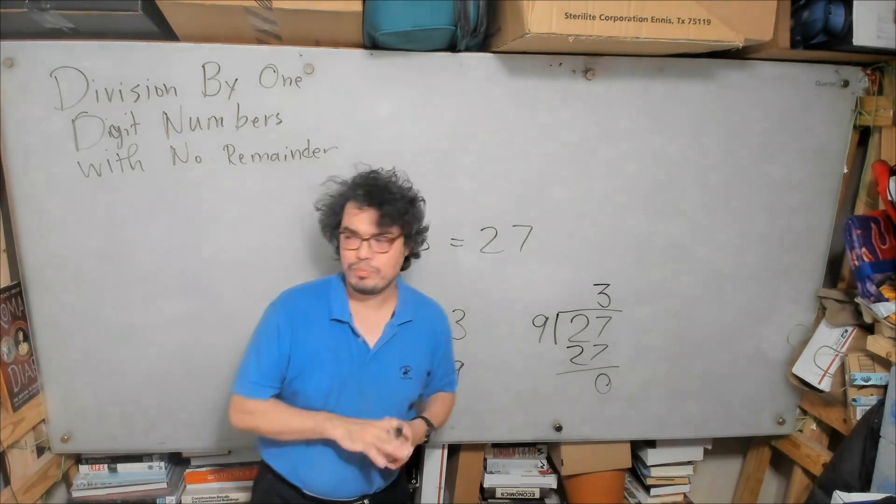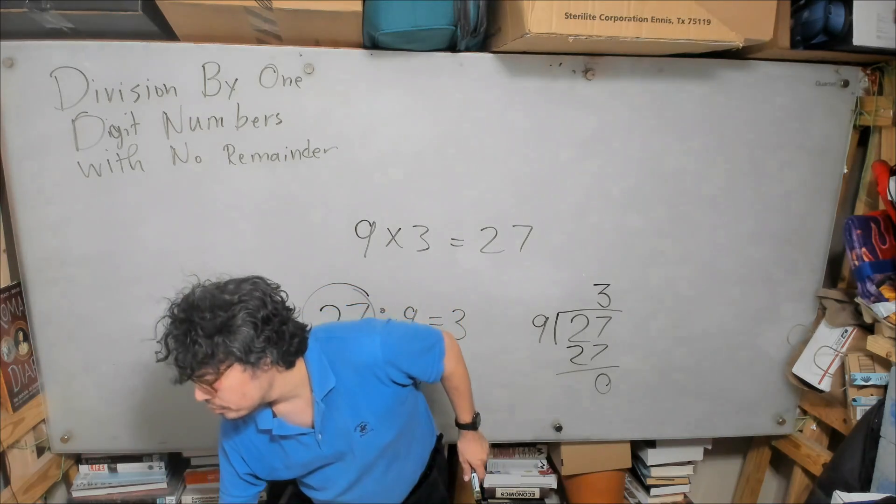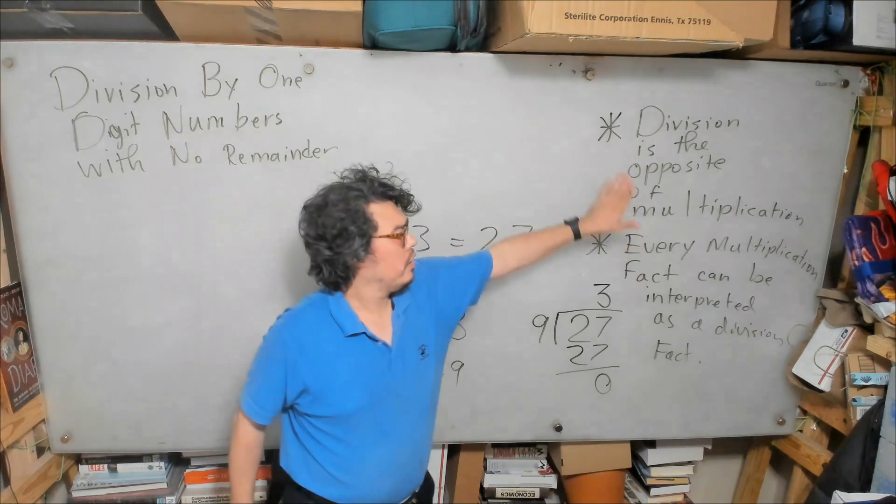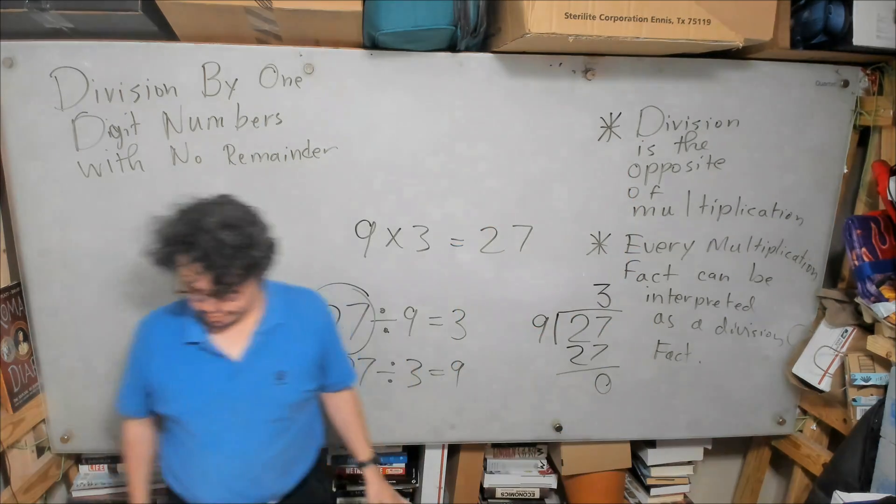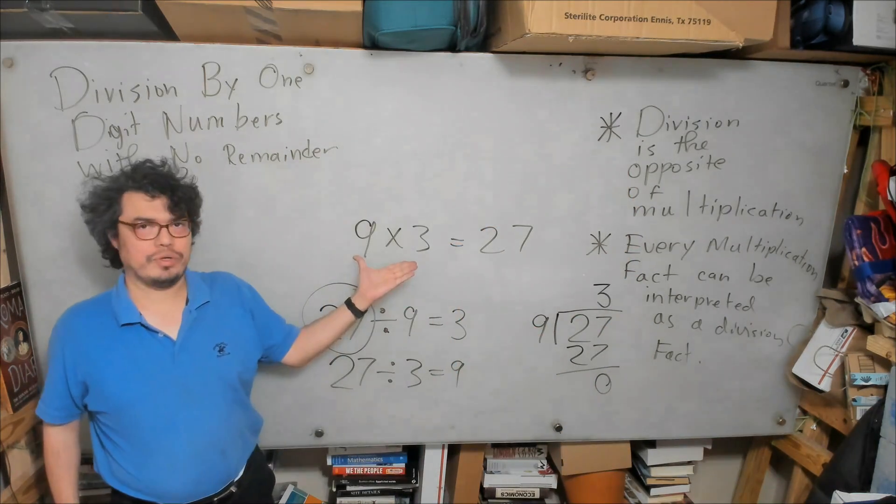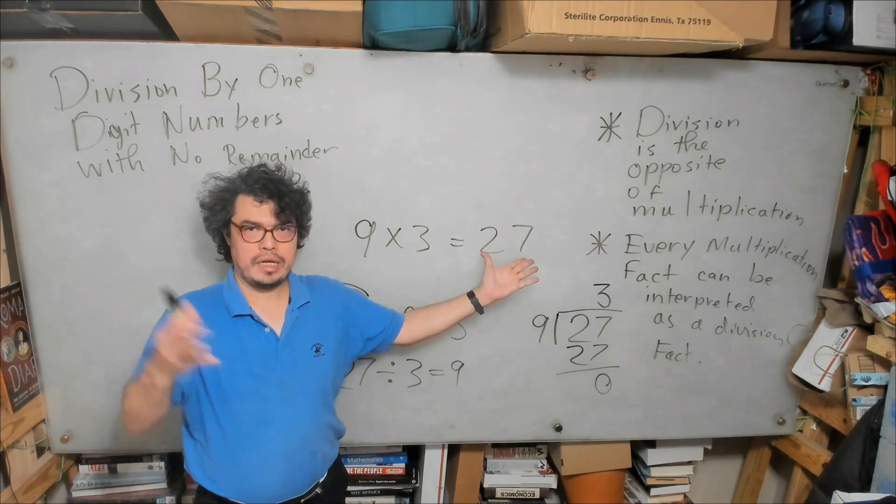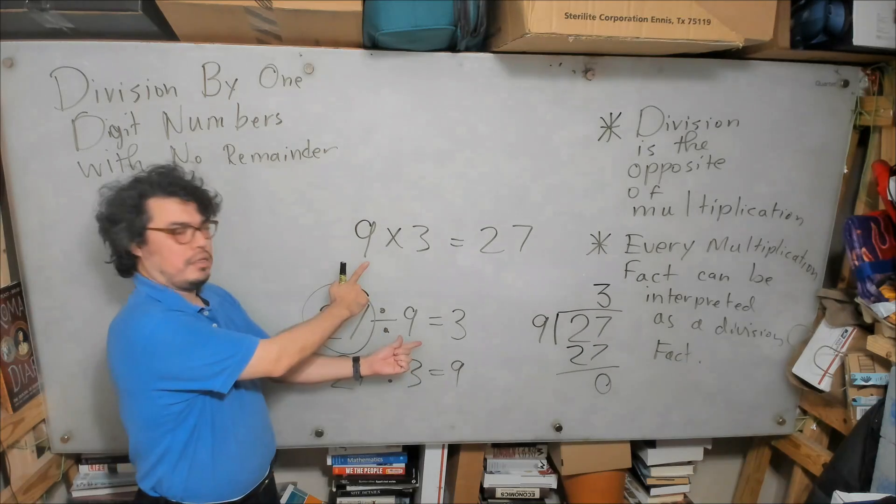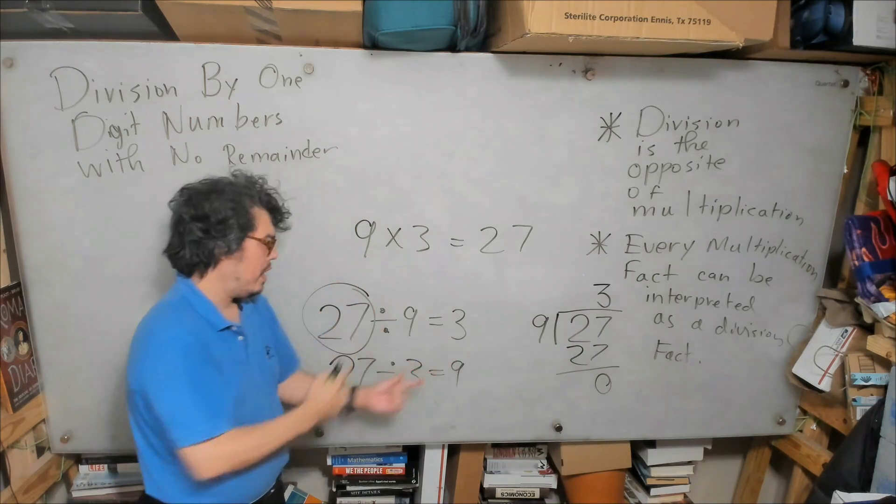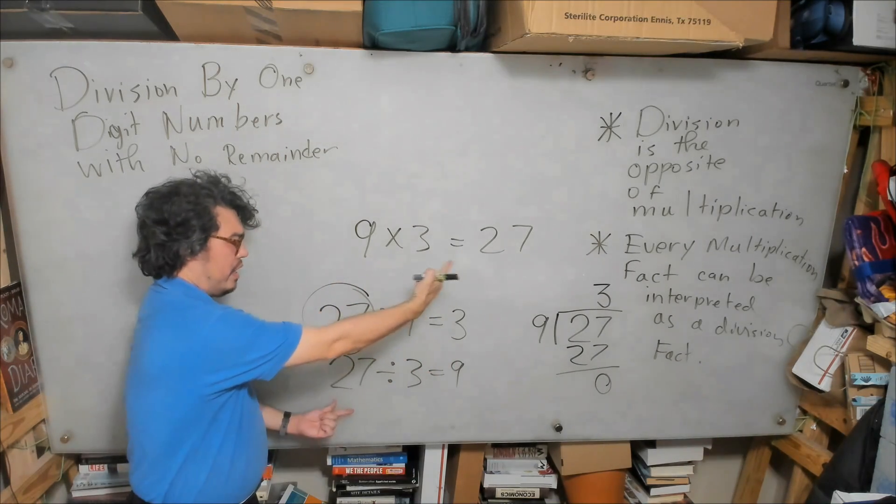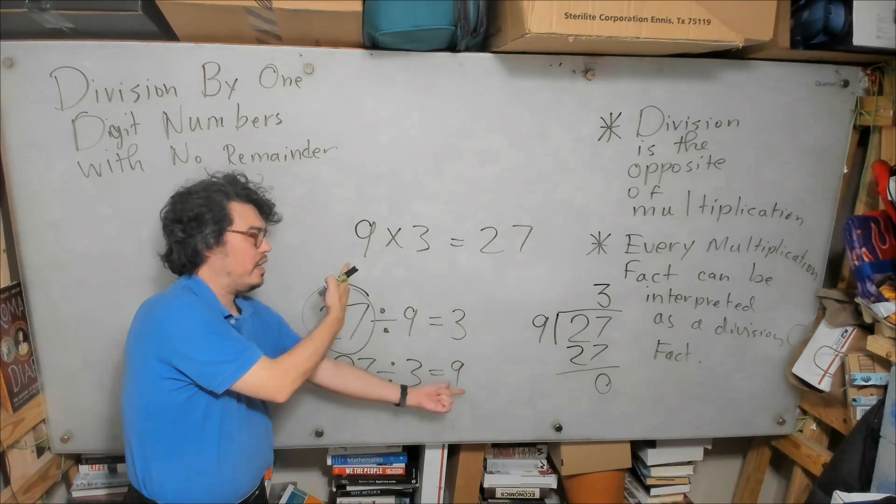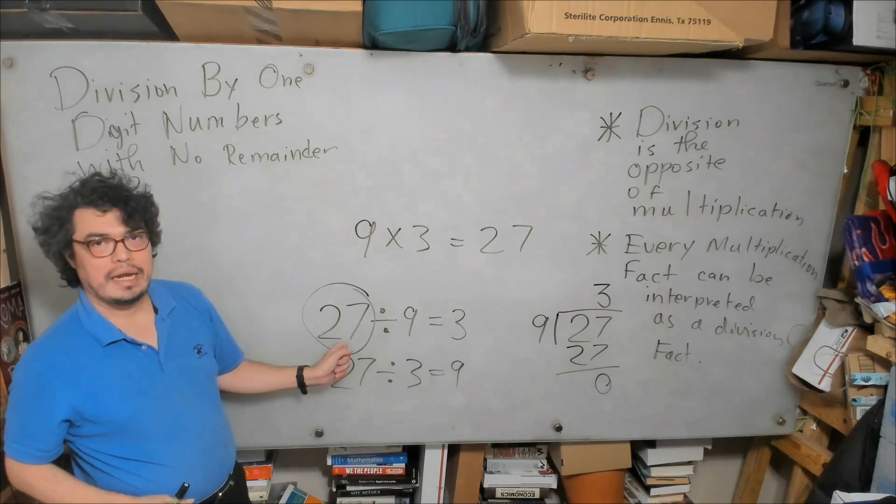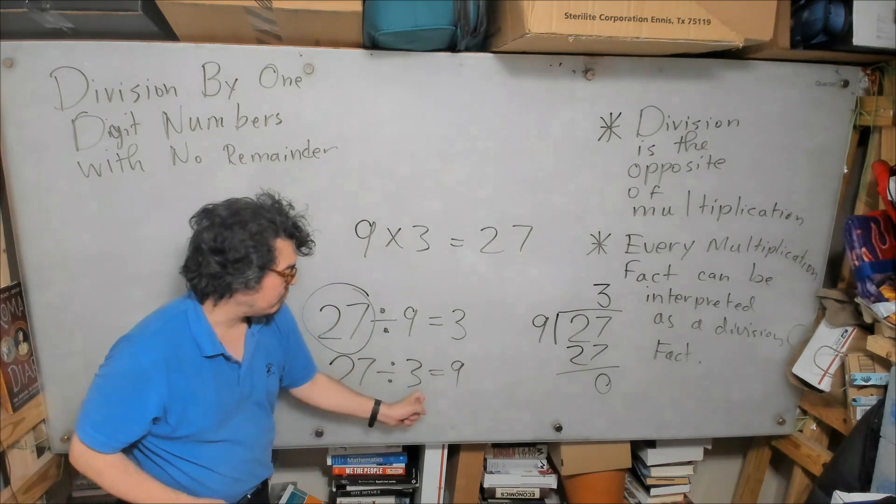So let me just briefly recap this for us. Division is the opposite of multiplication. So here we saw 9 times 3 was 27. And so the opposite of that would be, if I take 27 and I divide it by 9, I will get 3. And if I were to divide 27 by 3, I would get 9. Why? Because in the first example, 3 times 9 is 27. And in the second example, because 9 times 3 is 27.